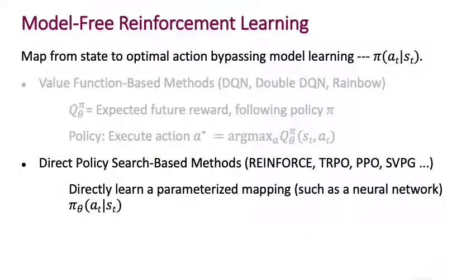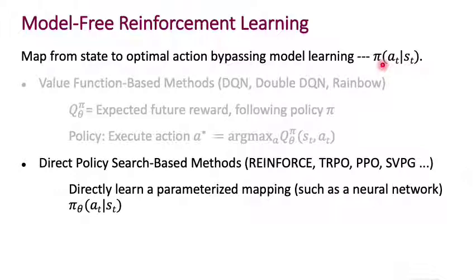Broadly, all of what we've seen — DQN and its variants and DDPG — fall under the category of model-free RL approaches. The model that these algorithms are free of is the transition model P of S' given S, A. They don't explicitly learn a transition model; instead, they bypass that step to directly learn the policy. Methods including DQN, double-DQN, and Rainbow are value function-based methods.